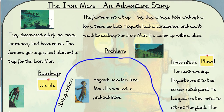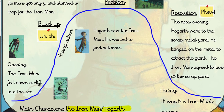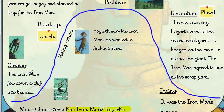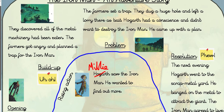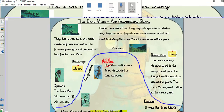We have so far thought about changing our character slightly, so instead of the Iron Man I've got the Silver Giant, and instead of Hogarth I've got Millie. We're going to follow the same structure of the story and change some parts to make it our own. Remember, you can change as much or as little as you like — if you want more of a challenge you can change a lot; if you're less sure, you can follow my template and example to help you.